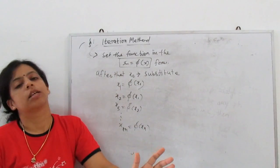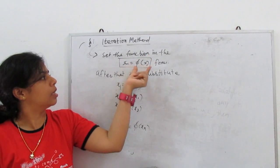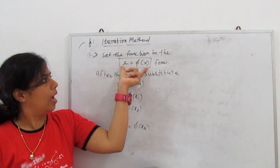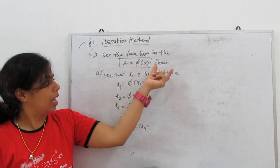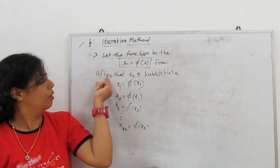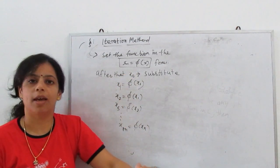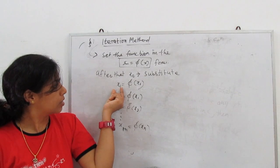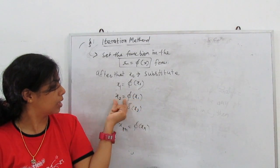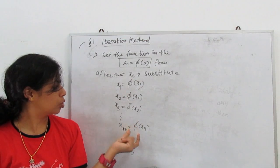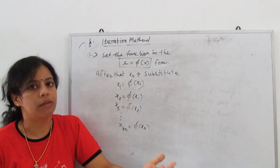Step 1: whatever the given equation or function, we have to rearrange it in the form x = φ(x) — that is, find x in terms of another expression in x. Then we take one starting value x₀ and substitute: x₁ = φ(x₀), then x₂ = φ(x₁), x₃ = φ(x₂), and so on. When the roots repeat, that is the most suitable root of the given equation.